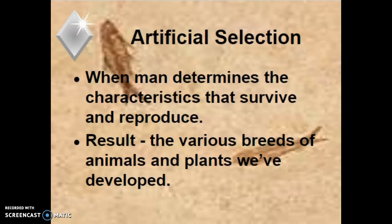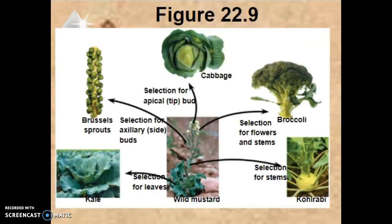Part of Darwin's success was because he based a lot of his ideas on artificial selection. With artificial selection, if we want a big, strong workhorse, we take a big strong male horse and a big strong female horse, mate them together, and they have a big strong baby. Same thing with racehorses, dogs, and vegetables — if we select for leaves, we end up with kale.